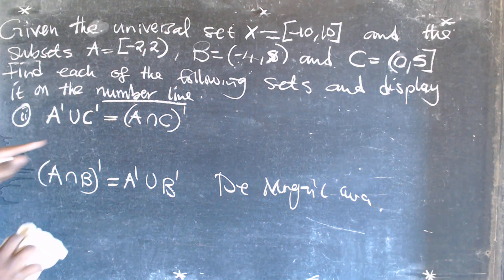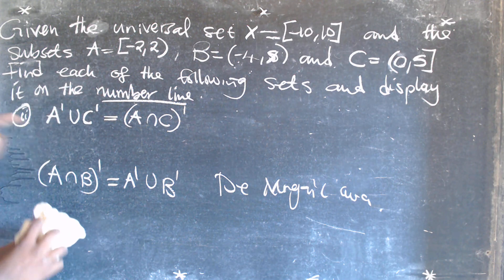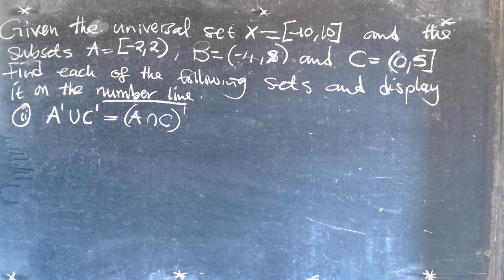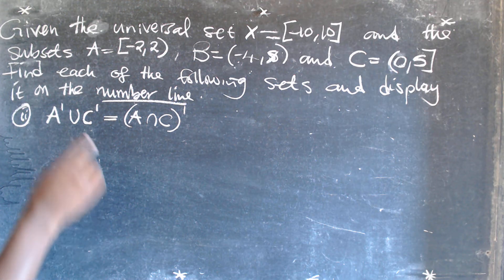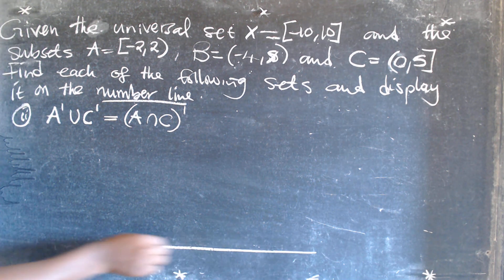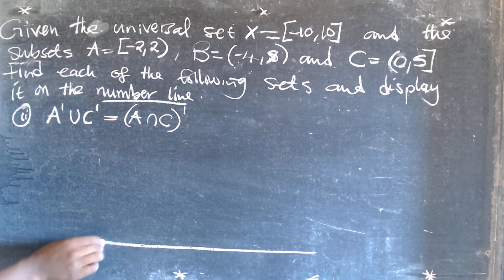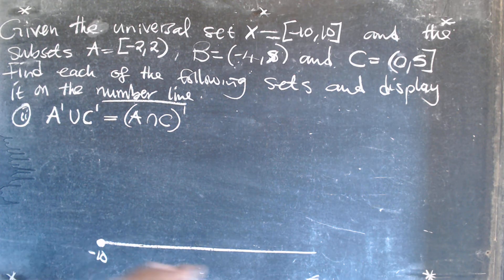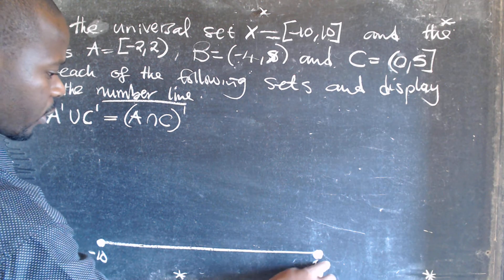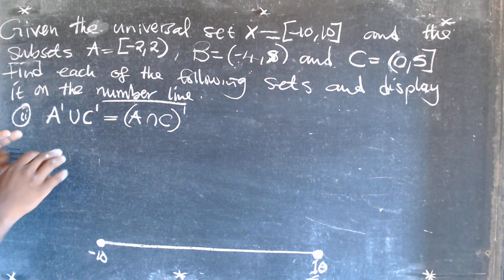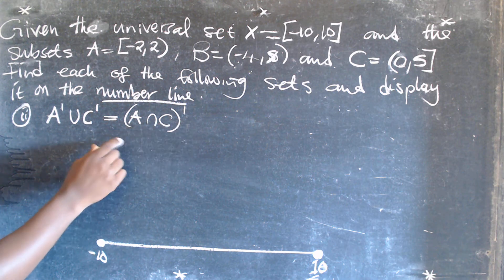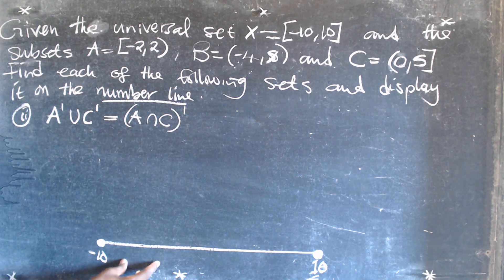Now since we know this is De Morgan's Law and we want to show this information on the number line, remember that every time we're trying to show this on the number line, we're supposed to start with the universal set. The universal set in this case is from negative 10, which is part of the set, to positive 10. Now from here we want to show A intersection C complement, so we'll show set A and C first.